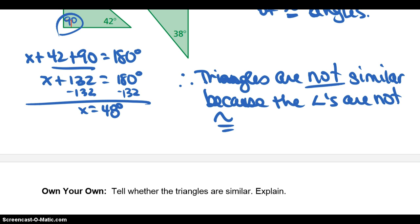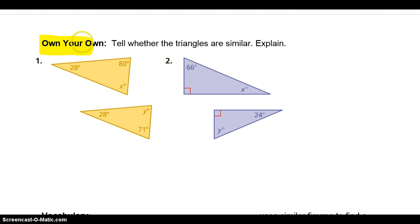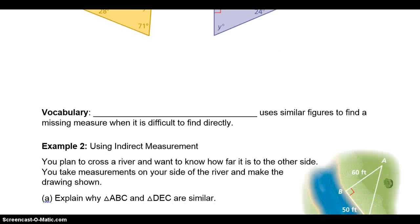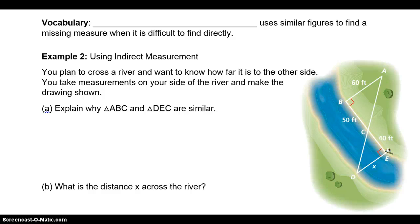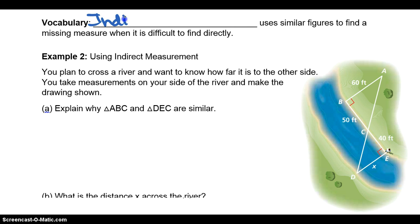Move on to the next page. You'll see on your own, go ahead and fill those in, figure out whether they're similar or not and give me some explanation. Then move on to this problem. If it's hard to measure something directly, we can use indirect measurement. Indirect measurement uses similar figures to find a missing measure when it's difficult to find directly.